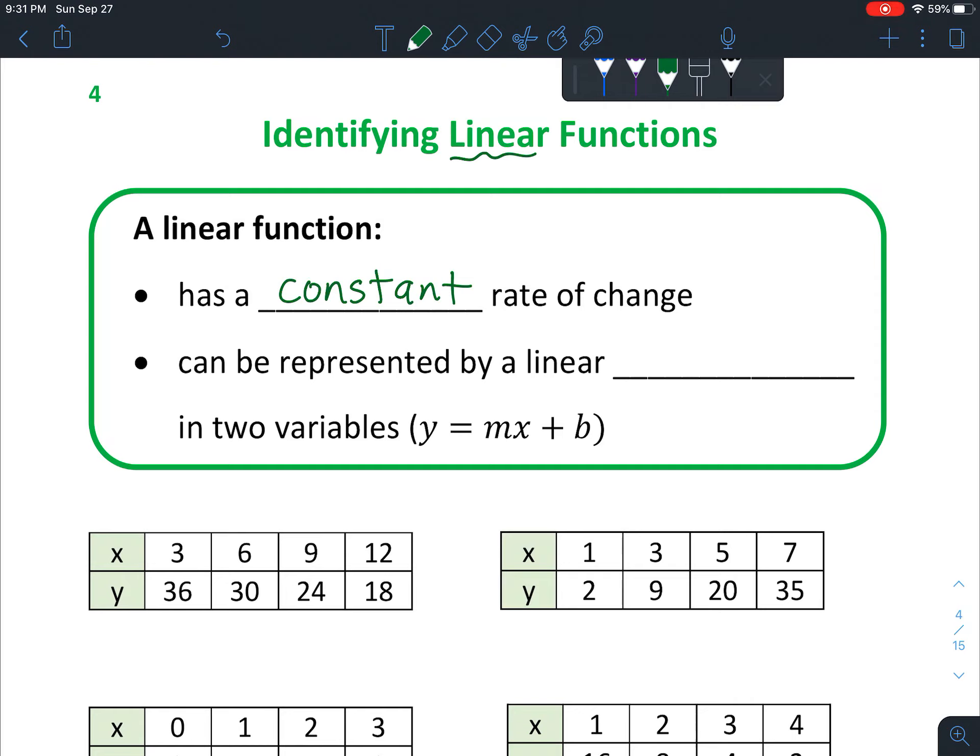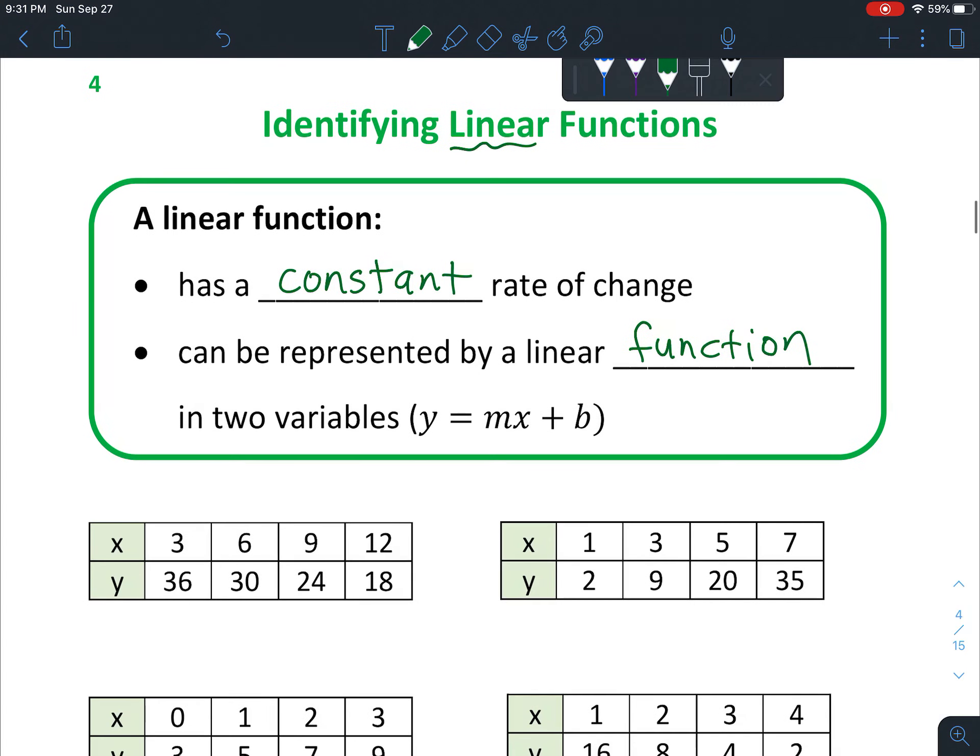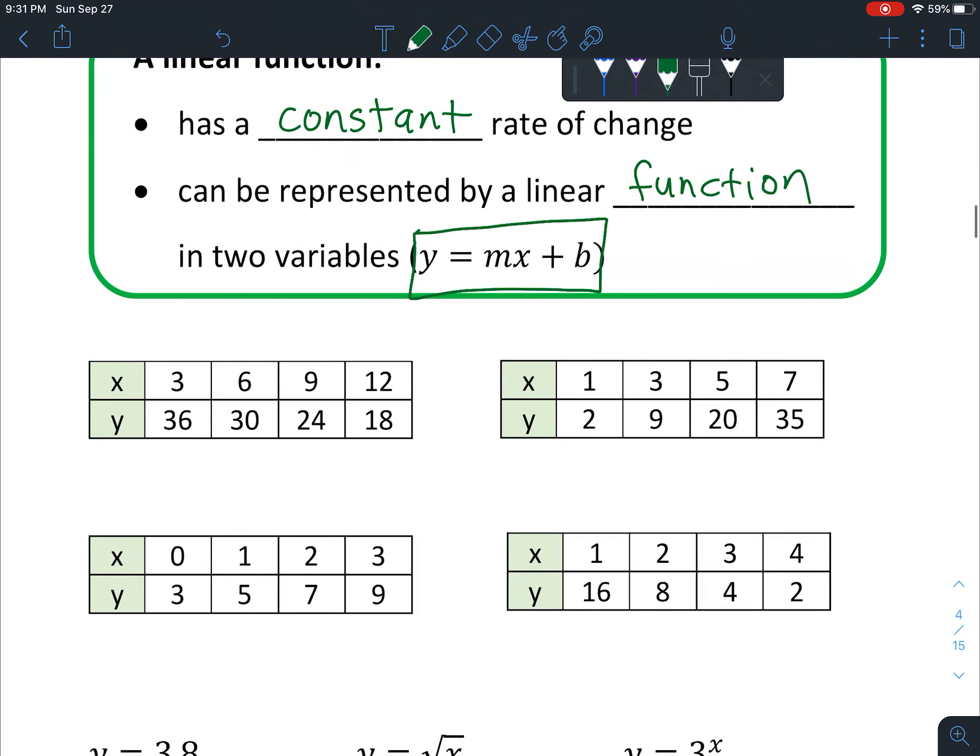It can always be represented by a linear function in two variables: y equals mx plus b. This is called slope-intercept form, a very normal form you see a lot when you talk about linear functions. You put in an input and then get your output.